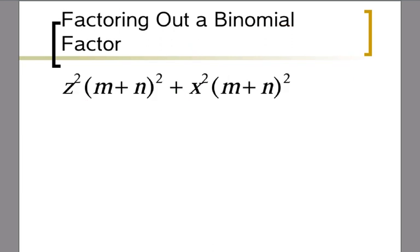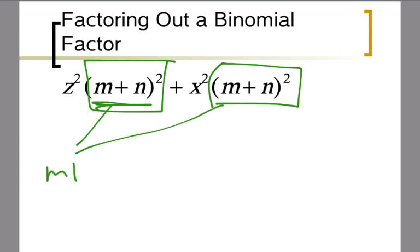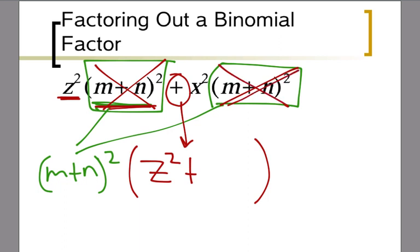This time we've got m plus n squared in common, so there's actually a whole exponent as well. I'm going to pull out m plus n squared and write the parentheses for the leftovers. If I pull out m plus n squared, it's gone and I'm left with z squared. So I put z squared plus, the plus sign comes down, the other m plus n crosses out, and I'm left with x squared. There's no simplifying to be done, so this is your final answer on this problem.